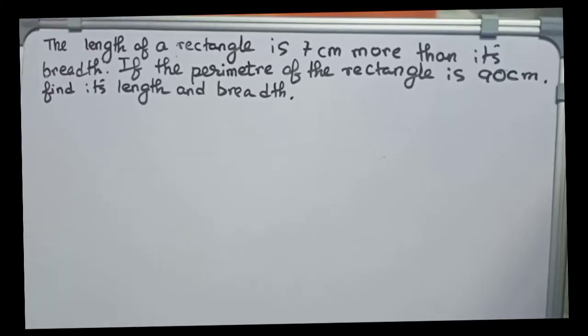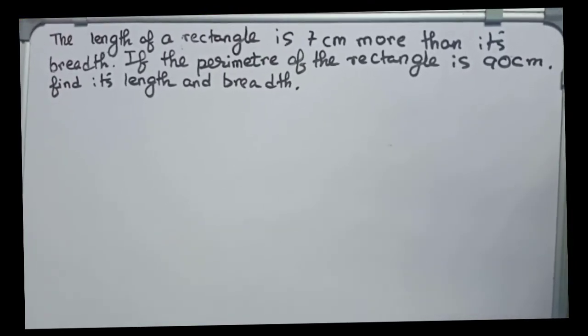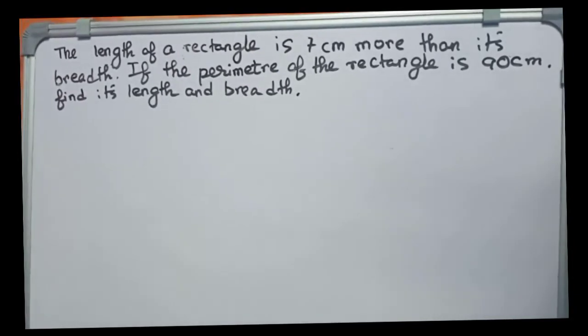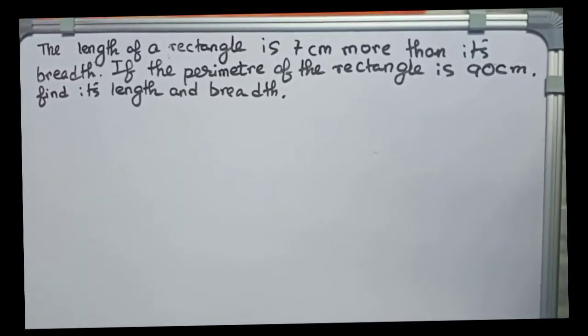Hello guys, welcome to this video. In this video, our question is: the length of a rectangle is 7 centimeters more than its breadth. If the perimeter of the rectangle is 90 centimeters, find its length and breadth. So let's start.